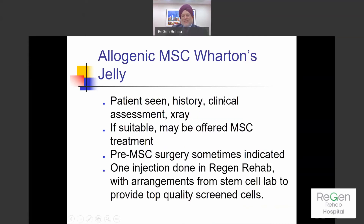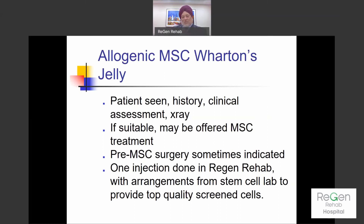I use allogenic cells from Wharton's jelly most of all. The reason I prefer allogenic over the patient's own stem cells is that my lab scientists tell me if you take stem cells from the bone marrow of a patient aged 50 or above, they are very difficult to grow and don't multiply easily — and this may be part of why we age. So I use these young, very active cells from Wharton's jelly, and they work wonderfully.